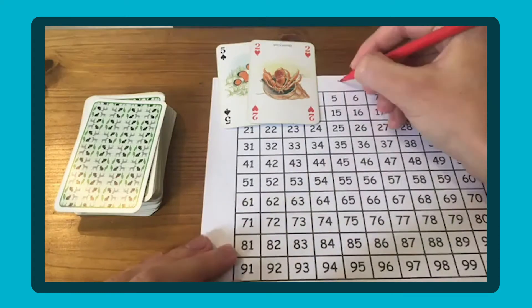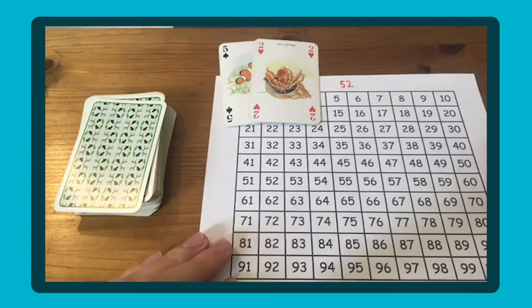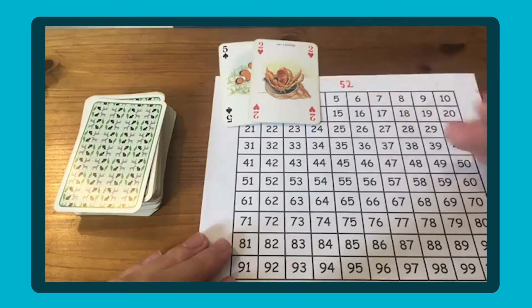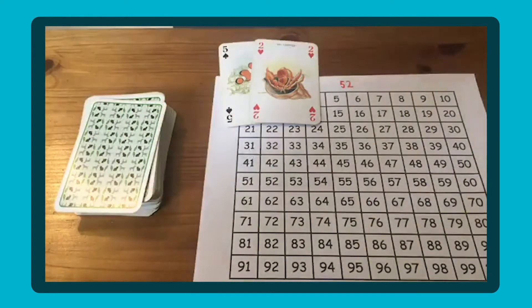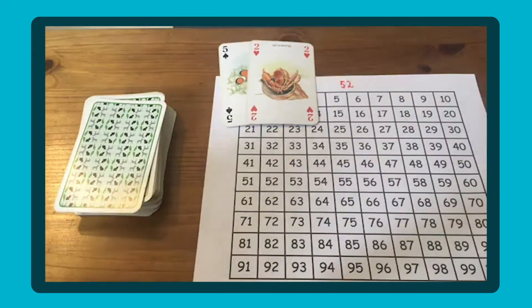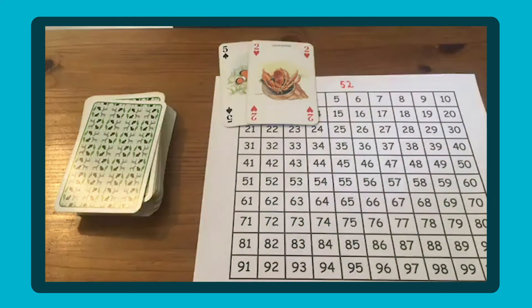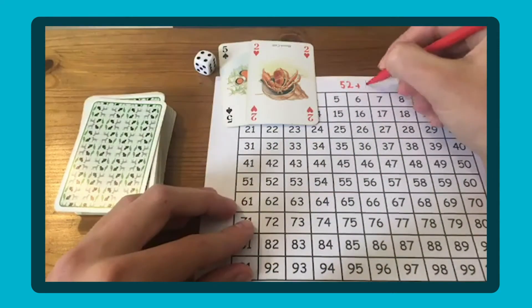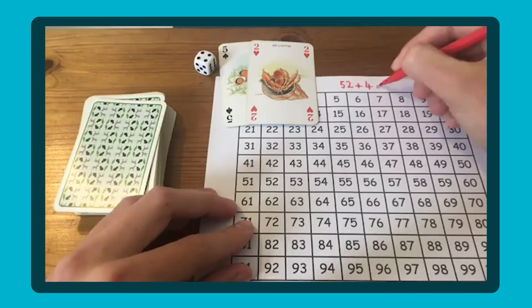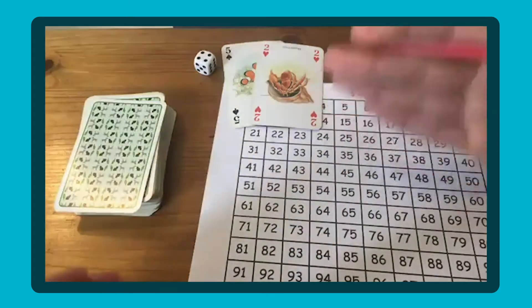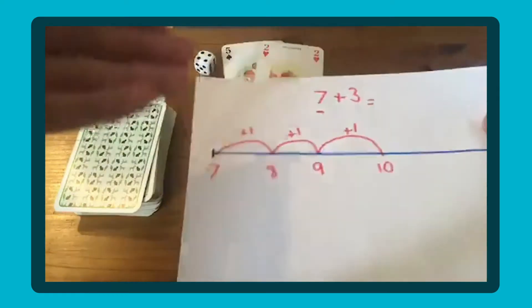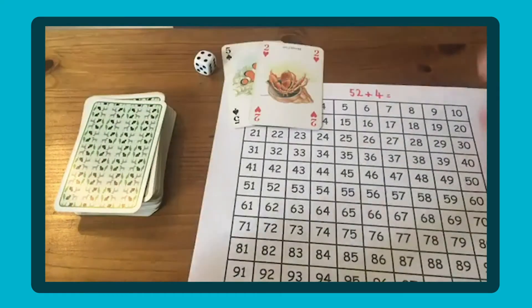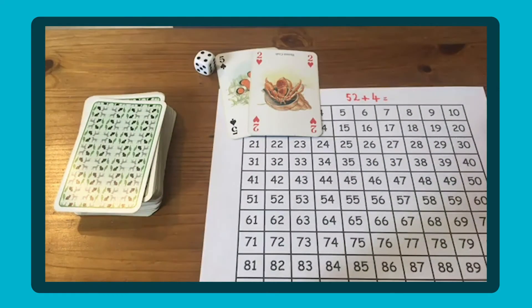You could do it on a separate piece of paper. Again, you can use one digit. I'm going to get my dice back and see what I need to add to that number. I rolled a four. So I've got 52 add four, and then you can bring that number line back in and do 52 add four counting on if your child needs that scaffold still.